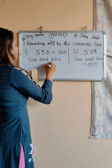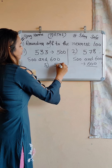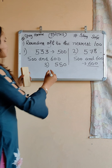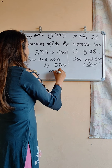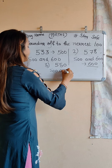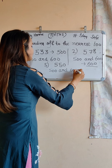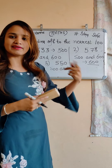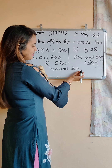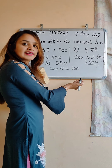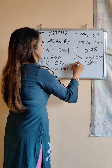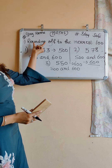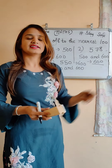And the last one is 550. Again, this lies between 500 and 600. But its answer is always 600, because it is our greatest 100 — it is our midway term. So its answer is always 600. This is rounding off to the nearest 100.